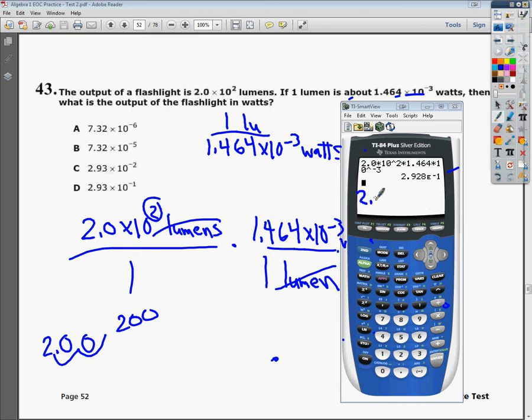This E to the, that means times 10 to the. So, what they're telling you is it's 2.928 times 10 to the negative 1, which looks suspiciously like the answer to this question is going to be D. And it does happen to be D.